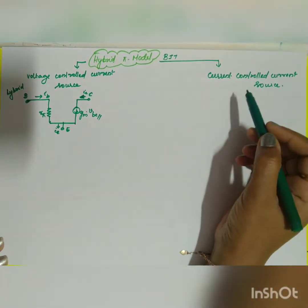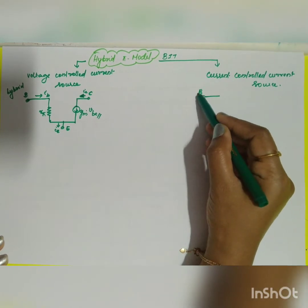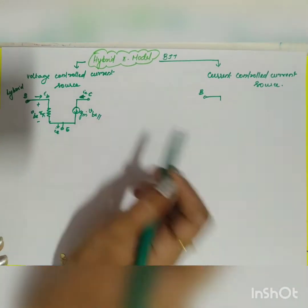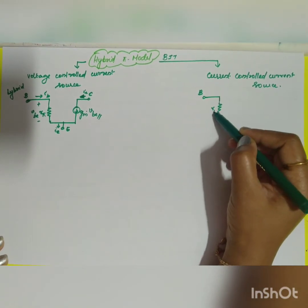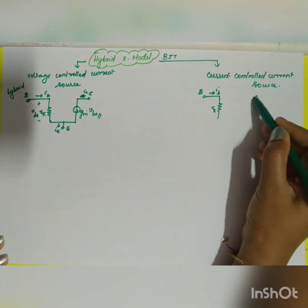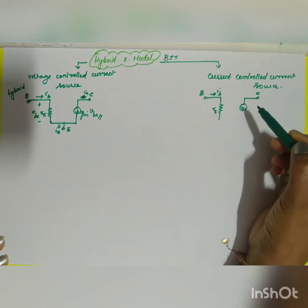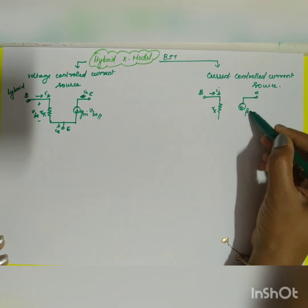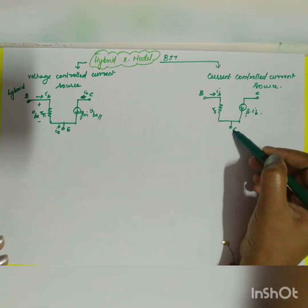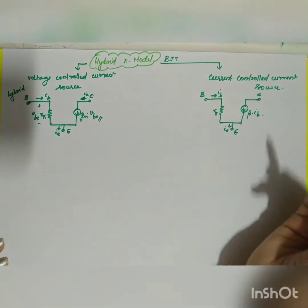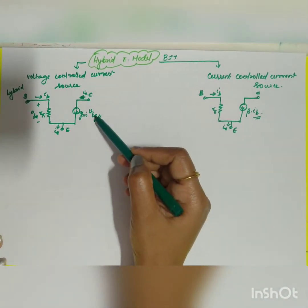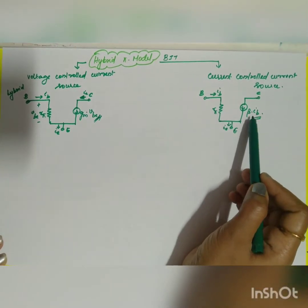In the current controlled current source configuration, v_be is replaced by a current. You still have the input resistor r_pi, and the current flowing at the input is ib. The collector is the output terminal, and the current source value is given as beta×ib. The emitter is grounded and carries current ie. The only difference is that here ib controls the current source, whereas in VCCS, v_be controls it.